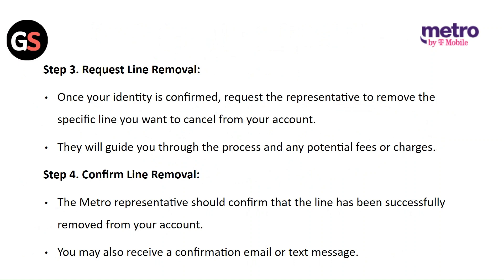Step three: request line removal. Once your identity is confirmed, request the representative to remove the specific line you want to cancel from your account. They will guide you through the process and any potential fees or charges. Step four: confirm the line removal. The Metro representative should confirm that the line has been successfully removed from your account. You may also receive a confirmation email or text message.